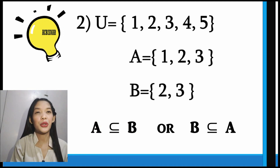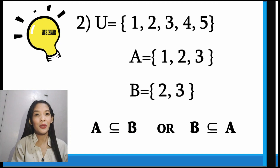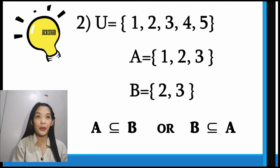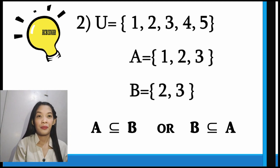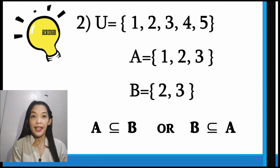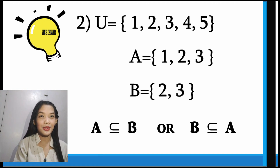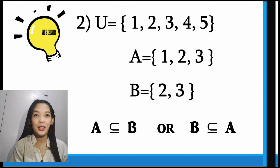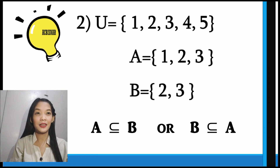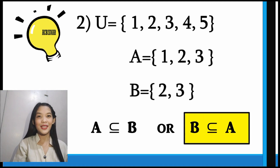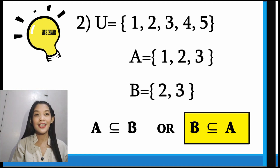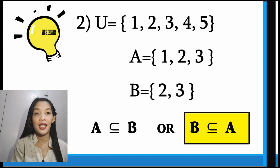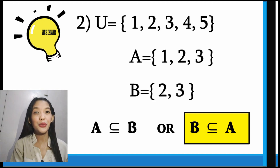Let us have example number 2. The universal set has the elements 1, 2, 3, 4, and 5. Set A has the elements 1, 2, and 3. And set B has the elements 2 and 3. The answer is B is a subset of A, because every element in B can be found in A — and those are 2 and 3.